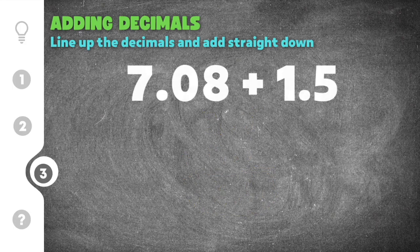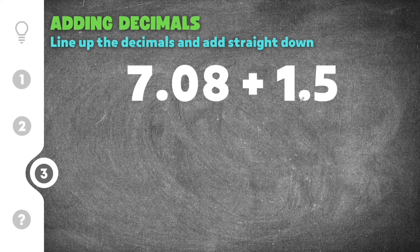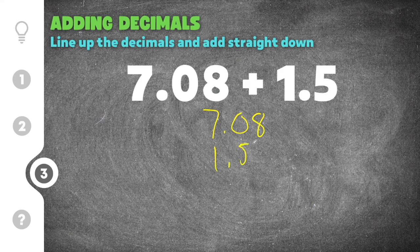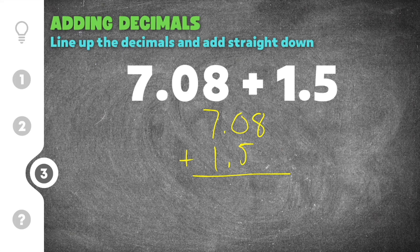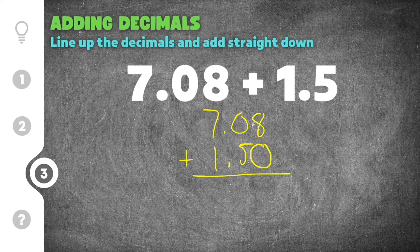Finally we have our last practice problem for adding decimals. This problem gives us 7.08 plus 1.5. I'm going to rewrite this so that the decimal points are lined up and we're adding. Now this time when you add, we have 8 plus and then there's nothing here. Anytime you are missing a number or you have an empty space like this, you're going to add the number 0 as a placeholder for that spot. So this would be like saying 8 plus 0, and that's going to be 8.